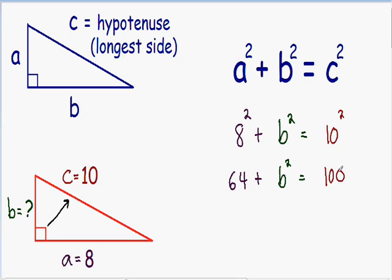Now we want to solve for b and get b by itself, so we want to get rid of the 64 on the left side. I'm going to subtract 64 from both sides. On the left hand side, the 64's cancel and the only thing we're left with is b². On the right hand side, we have 100 minus 64, which is 36.